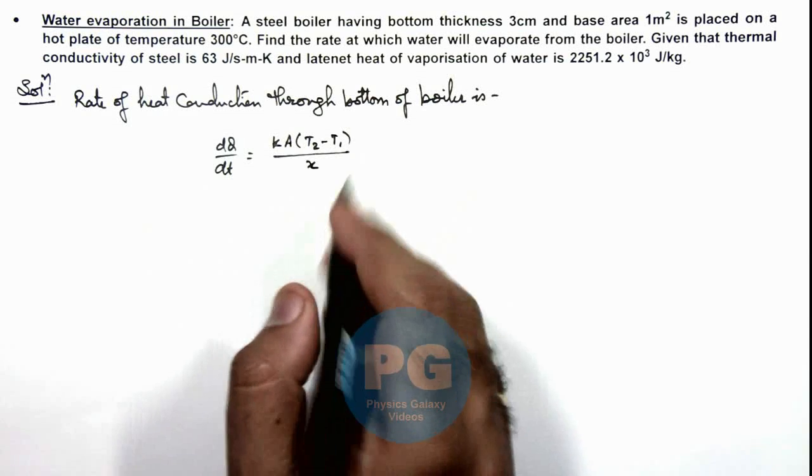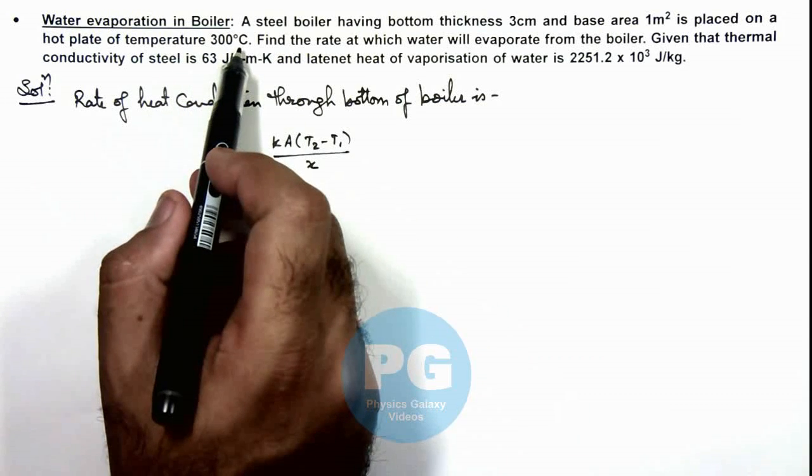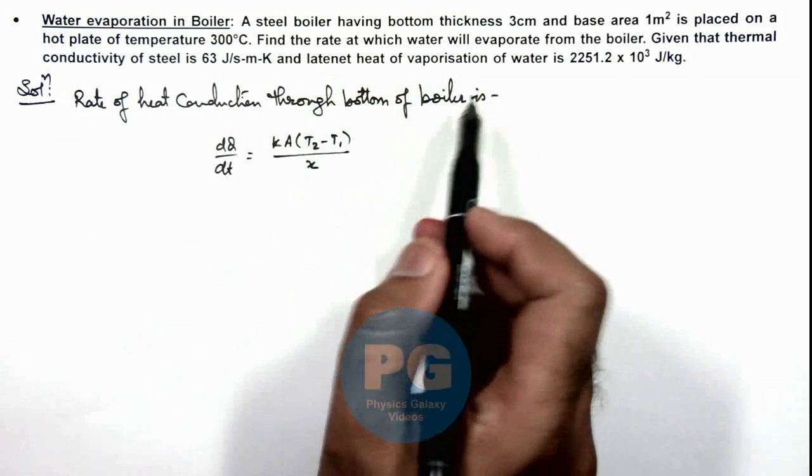Here we know that the temperature of hot plate is 300 degree centigrade and that of boiling water is hundred.